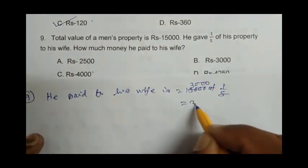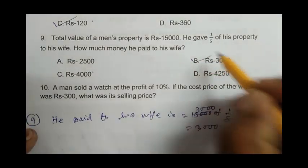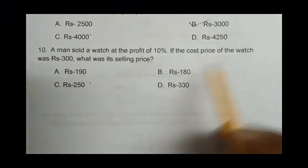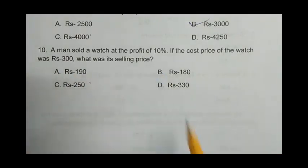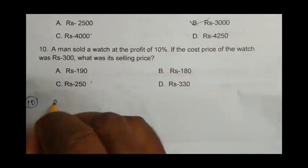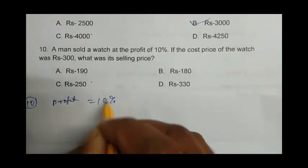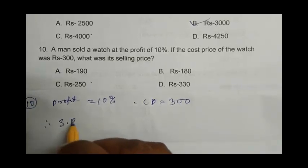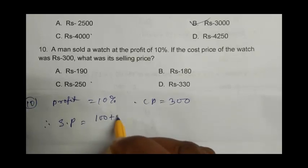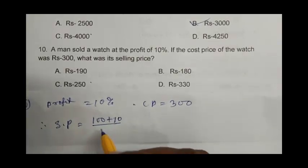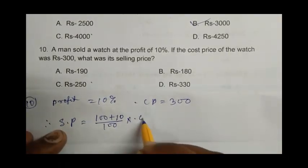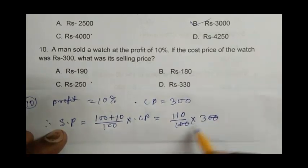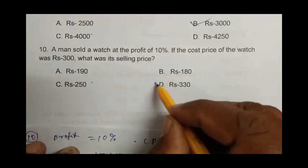Question number 10: A man sold a watch at a profit of 10%. If the cost price of the watch was Rs. 300, what was the selling price? Profit is 10%, cost price is 300. So selling price is (100 + profit percentage) ÷ 100 × CP, that is 110 ÷ 100 × 300 = 330. So D is the right answer.